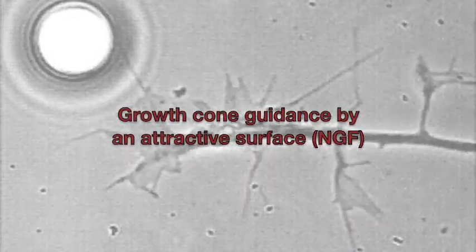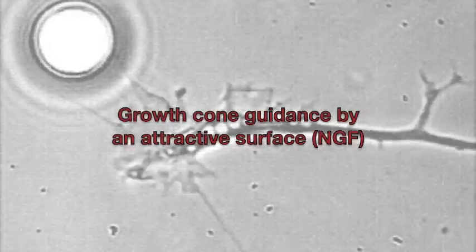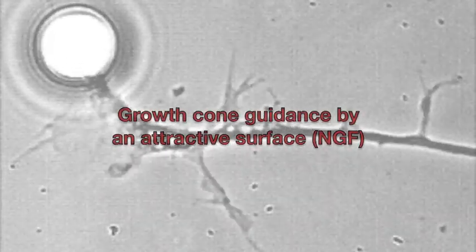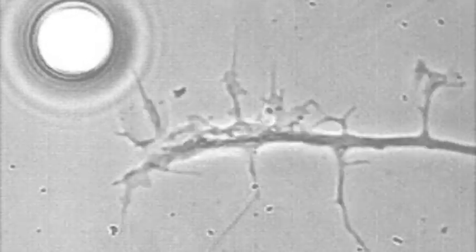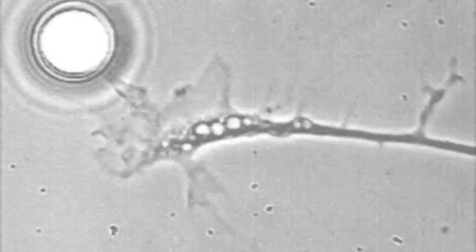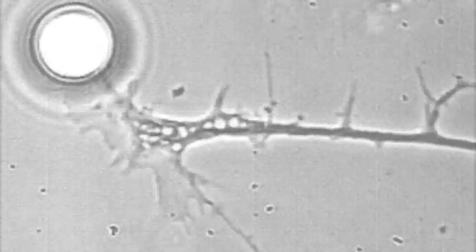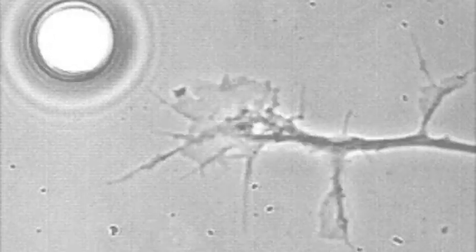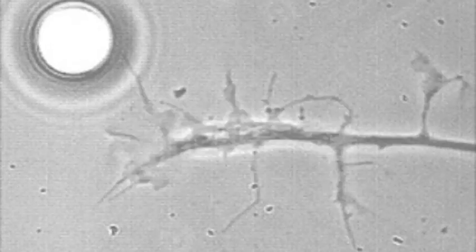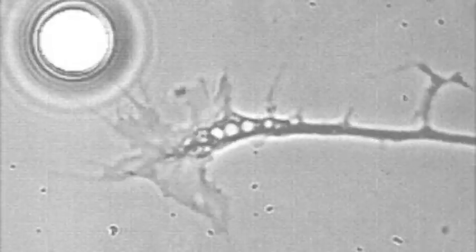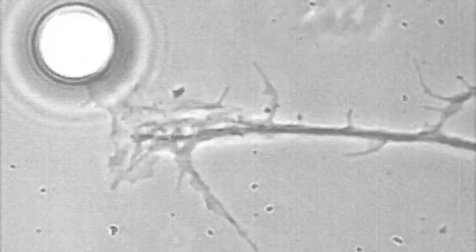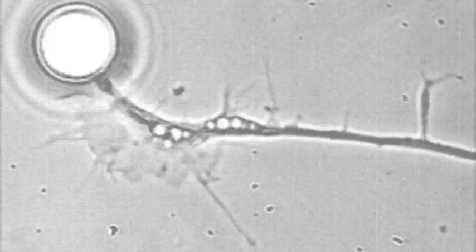In this movie, a sensorineuronal growth cone turns towards a small NGF-coated bead. Filopodial contacts with the bead first stabilize and expand, then microtubules and organelles rapidly flow forward towards the contact point.